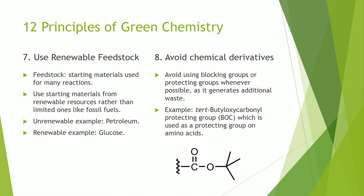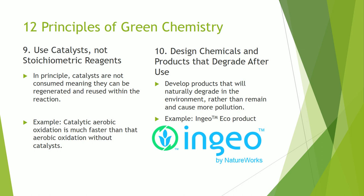Number eight: avoid using chemical derivatives. Avoid using blocking groups or protecting groups whenever possible, as it generates additional waste. An example of this is the tert-butyloxycarbonyl protecting group, also called Boc, which is used as a protecting group on amino acids during reactions. Number nine: use catalysts, not stoichiometric reagents. Catalysts are not consumed in the reaction, meaning they can be regenerated and reused. An example of this is aerobic oxidation, which is oxidation using oxygen in the air, which is normally very slow, but using catalysts can cause it to occur much faster.